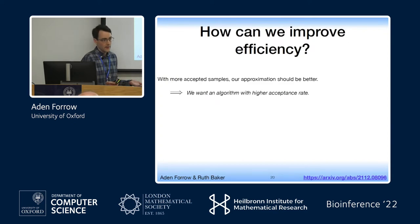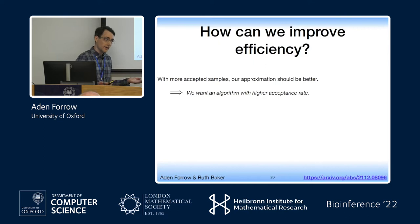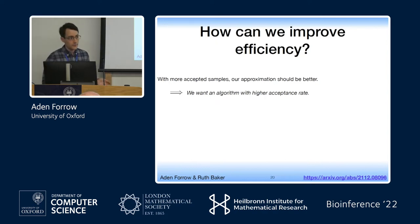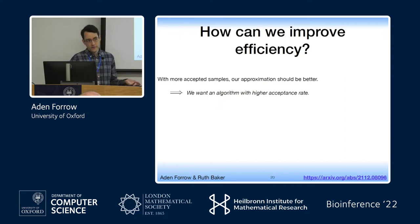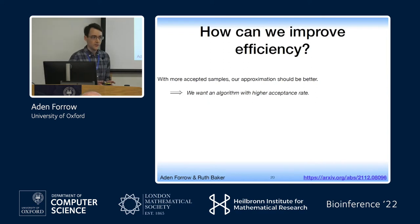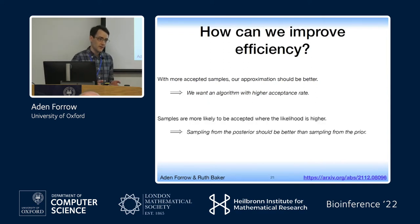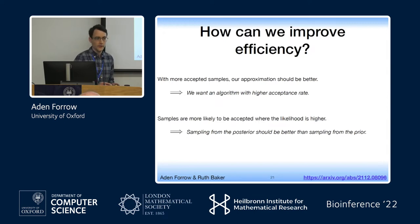If we had more accepted samples, we'd have a better approximation to our posterior. So if the algorithm had a higher acceptance rate — if you had to simulate fewer times to get the same number of accepted samples — that should be an improvement. How do you get a higher acceptance rate? Things are accepted if they look like the data. You'll get simulation results that look like the data if you're simulating from regions with higher likelihood. Simulating from the posterior should get you more simulation parameters likely to give results that look like your data.